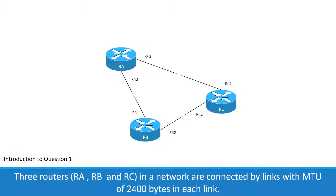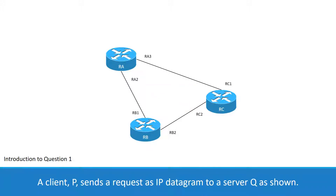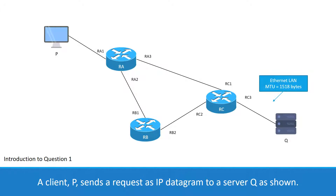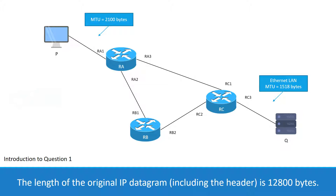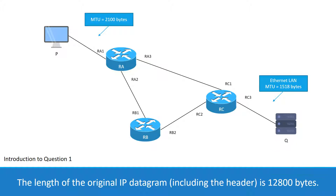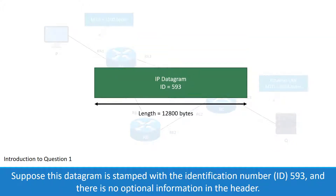Three routers, RA, RB, and RC, in a network are connected by links with an MTU of 2400 bytes on each link. A client P sends a request as an IP datagram to a server Q as shown. The link from P to router RA has an MTU of 2100 bytes. Q is connected to RC in the Ethernet LAN. The length of the original IP datagram, including the header, is 12,800 bytes. This datagram is stamped with identification number ID 593, and there is no optional information in the header.